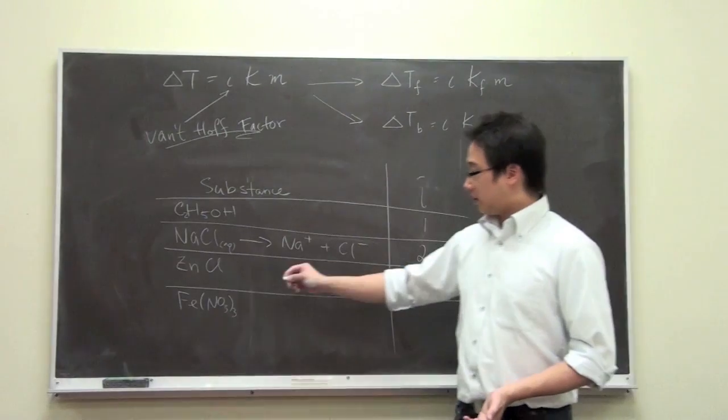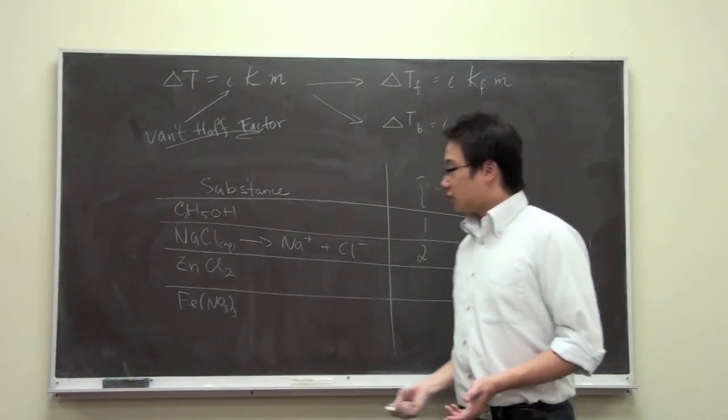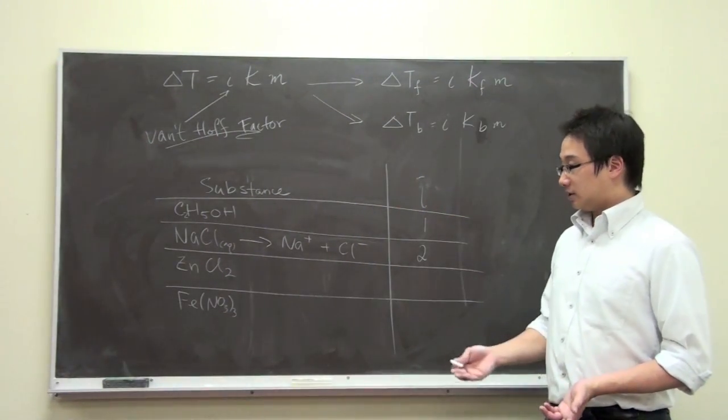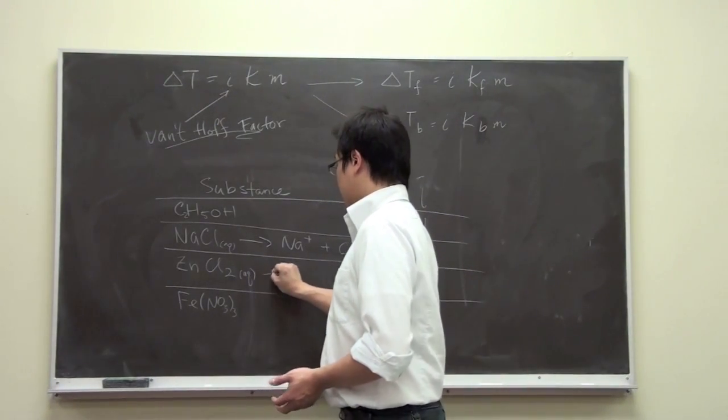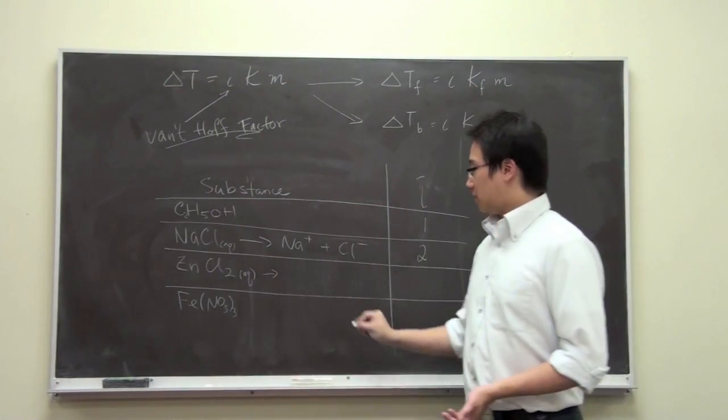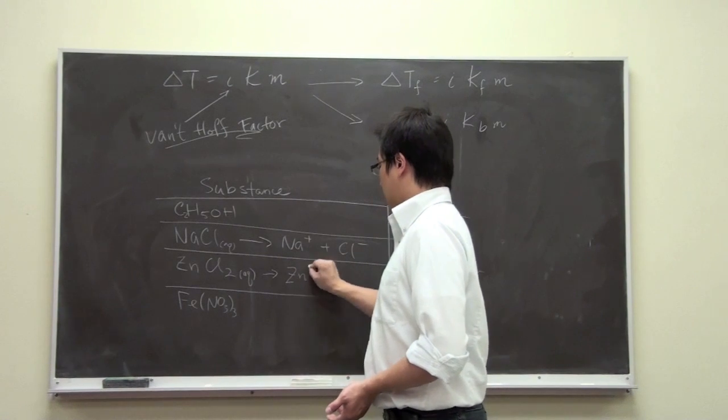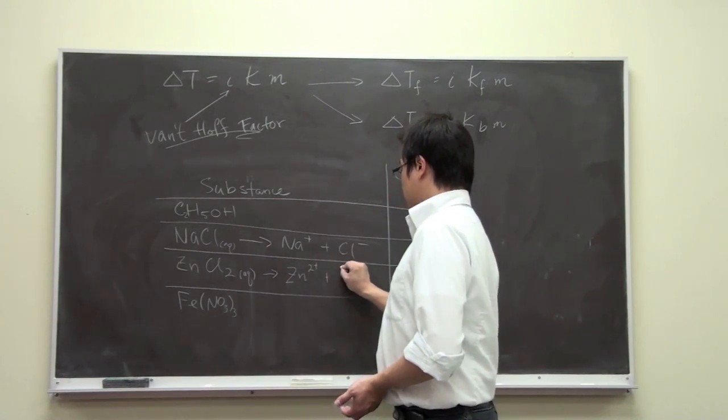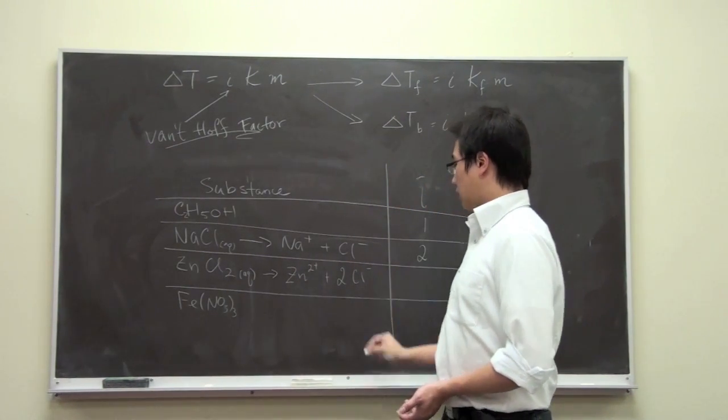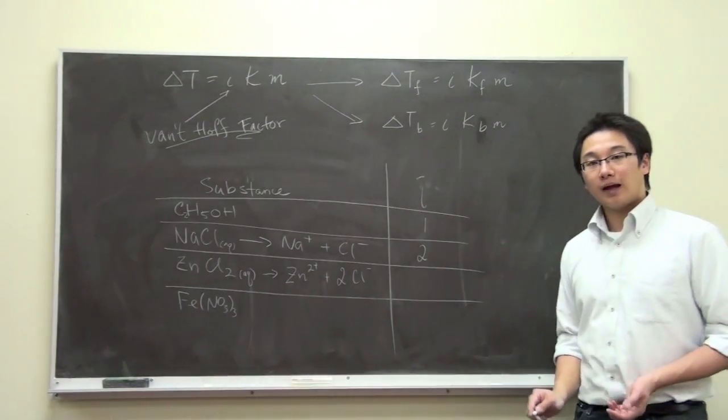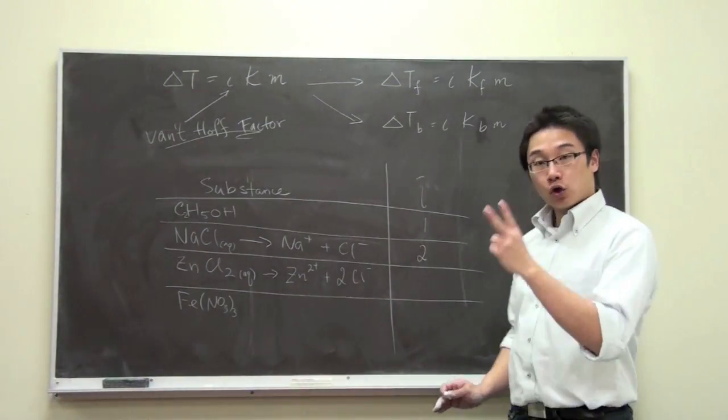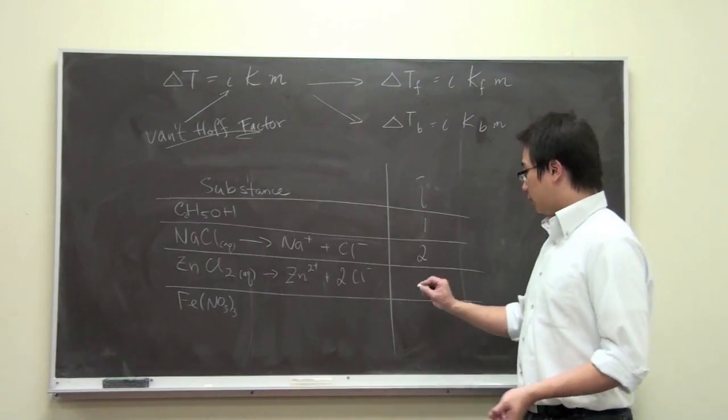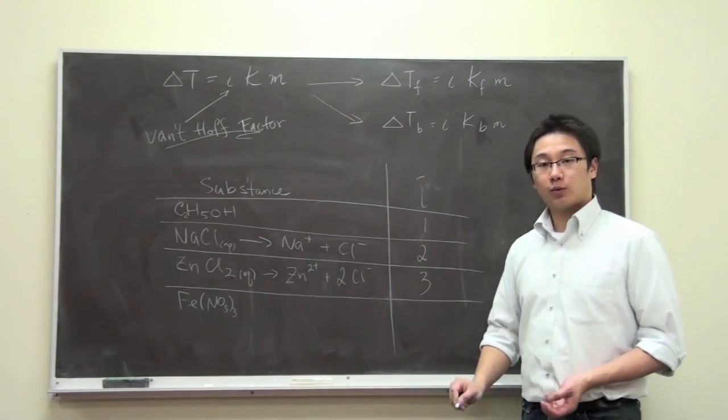Then we can look at the next example. Zinc chloride, ZnCl2, when it is in aqueous solution, meaning it is dissolved in water, is going to dissociate into Zn2+ and 2Cl-. We have three things: one zinc ion and two chloride ions. So in this case, the Van't Hoff factor will be 3.